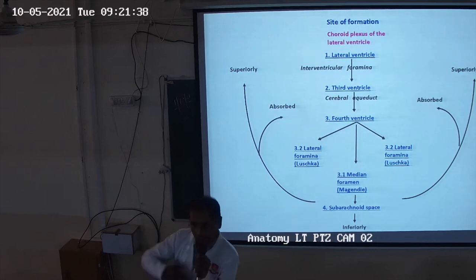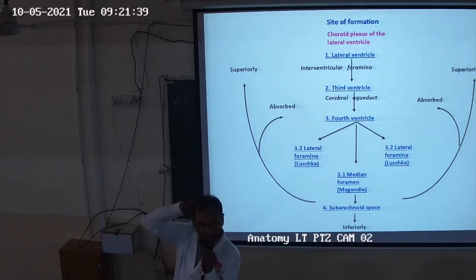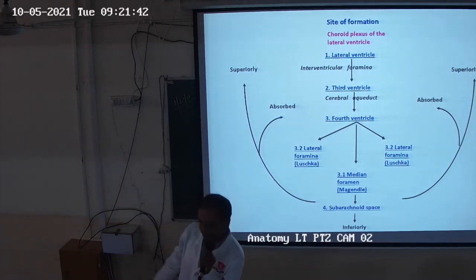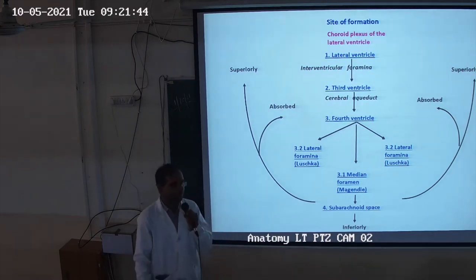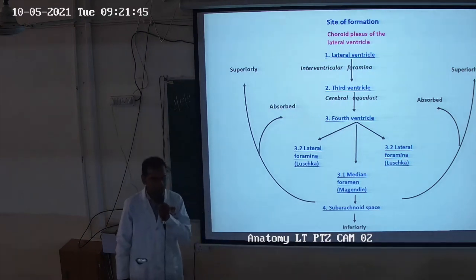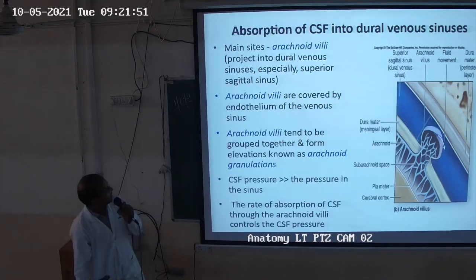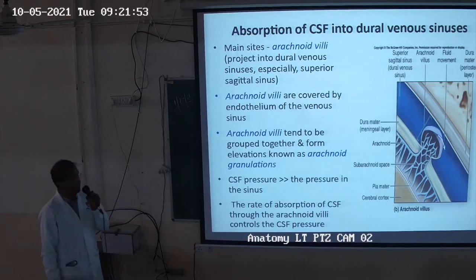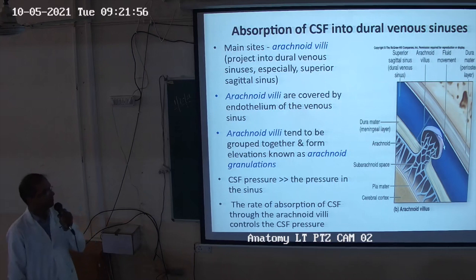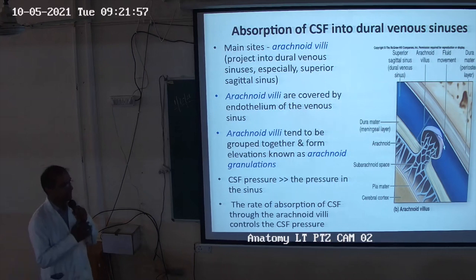The arachnoid villi are present in the superior sagittal sinus, and absorption of CSF occurs into the dural venous sinuses. The dural venous sinuses include: superior sagittal sinus, inferior sagittal sinus, superior petrosal sinus, inferior petrosal sinus, cavernous sinus, and straight sinus.